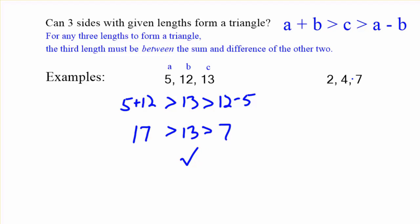Well, let's try 2, 4, and 7. I'm going to randomly choose the 7 to be the third side. 7. Is that in between 4 plus 2 and 4 minus 2? Let's see. 4 plus 2 is 6. 4 minus 2 is 2. Is 7 in between those two? No, it's not in between those two.